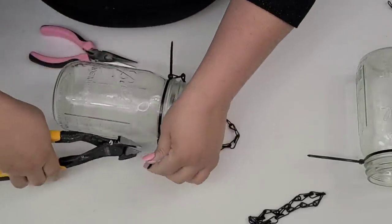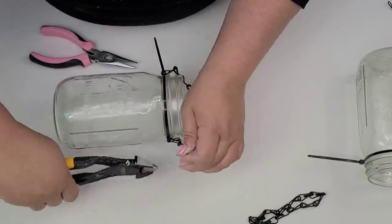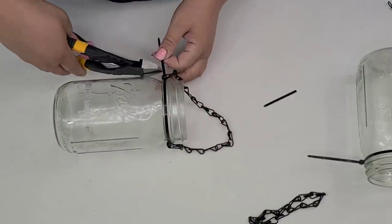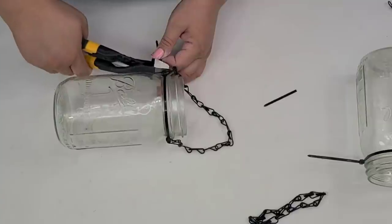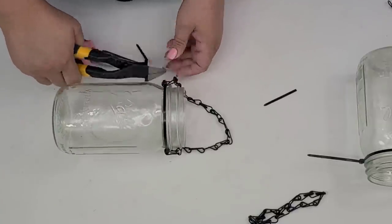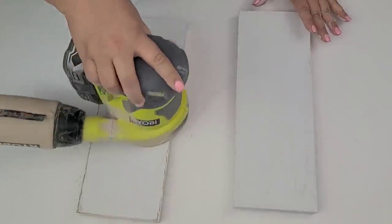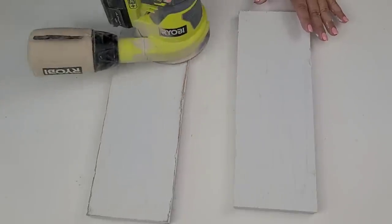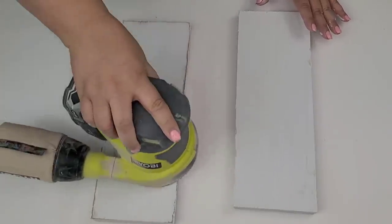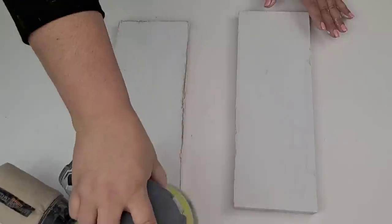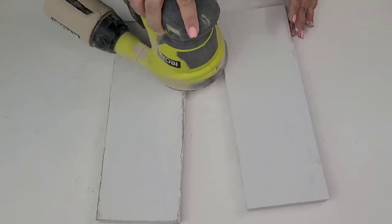And now that I have them threaded and nicely tightened, I am going to cut the excess off of the zip ties. I'm going to do the same thing on the other mason jar. Now I'm going to take my palm sander and a 220 grit sandpaper and I'm going to heavily distress each board, focusing on the edges.